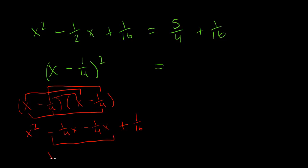Now, if we combine these two like terms, we'd get x² - 1/4 - 1/4 is - 1/2 x + 1/16. So, you can see this, since I just foiled it, I showed you it's equivalent to that, which is the same as what we have up here.